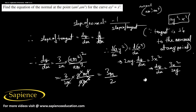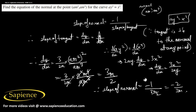Therefore, the slope of the tangent is 3m/2. The slope of the normal is equal to −1 / (3m/2), which equals −2 / (3m).